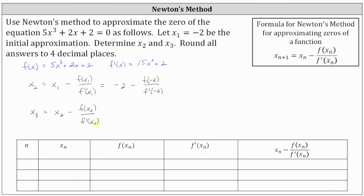We don't know x two until we calculate this first approximation. So now we'll create a similar table using desmos.com, where when n is equal to one, we know x one is given as negative two. The first row will have f of negative two, f prime of negative two, and finally x two, which equals x one minus f of x one divided by f prime of x one.